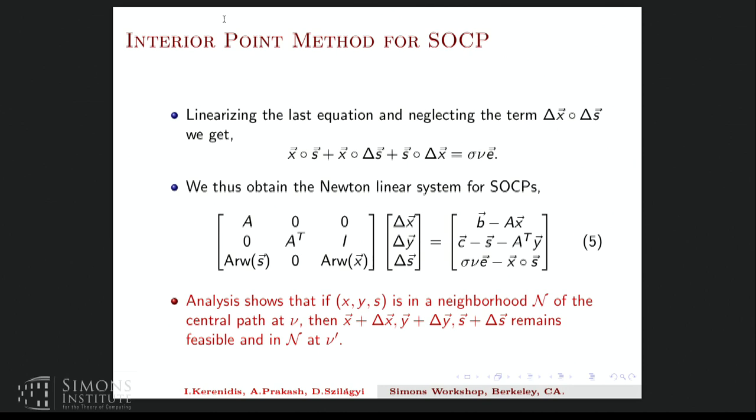And the analysis of the IPM in the classical case shows that if x, y, s is in the neighborhood of the central path, then the updated solution remains in the neighborhood of the central path. So the quantum IPM is a bit different. Like we don't solve these linear systems exactly, but we apply a quantum linear system solver and then do tomography to recover approximate solutions. And therefore one needs to give an approximate analysis which shows the same statement with respect to approximations.